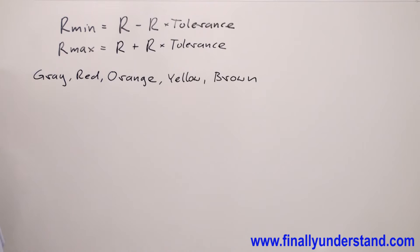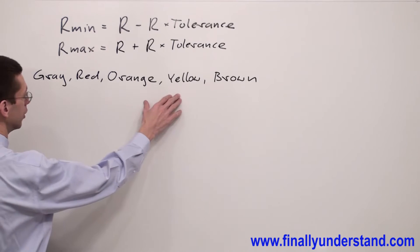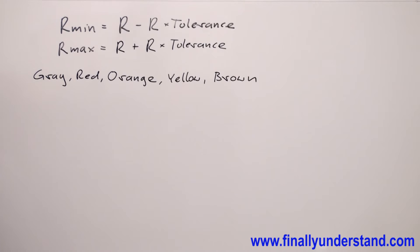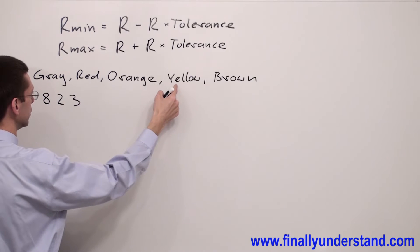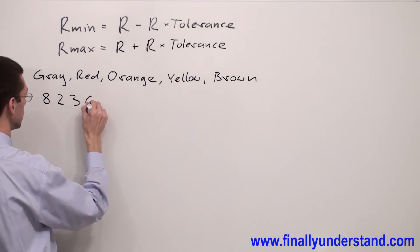The very first thing I have to find is the nominal value of this resistor. Remember, gray color represents number 8, red represents number 2, orange represents number 3, yellow at the fourth position represents 4 zeros.